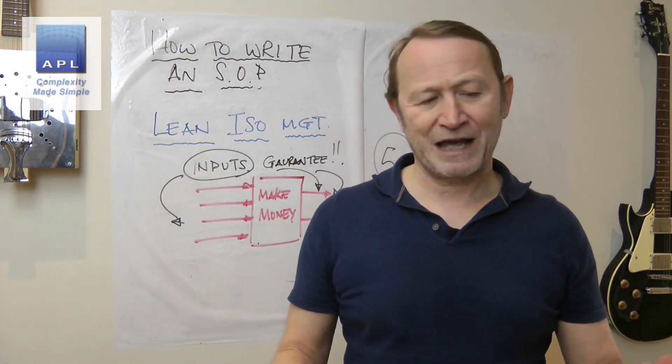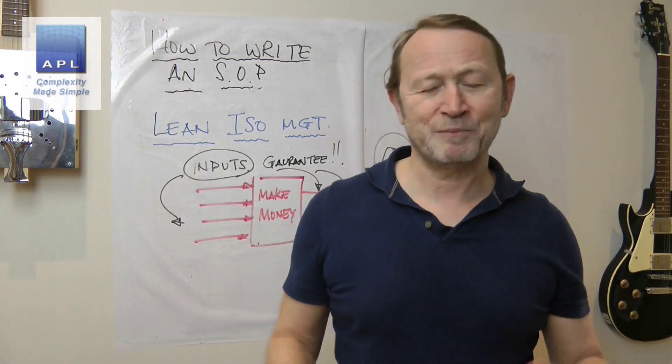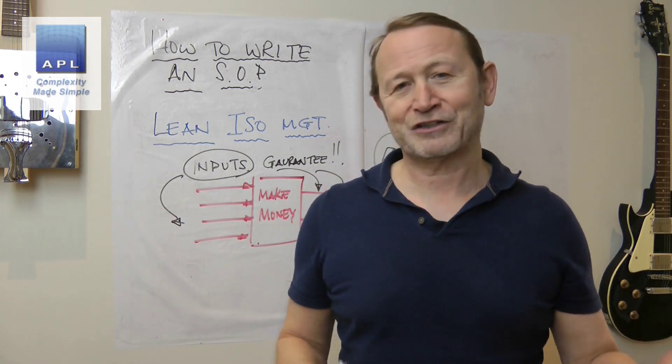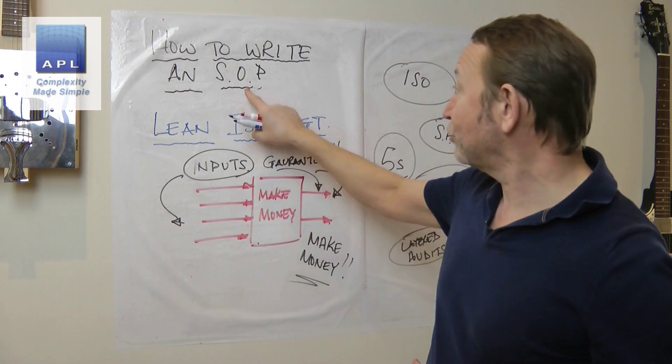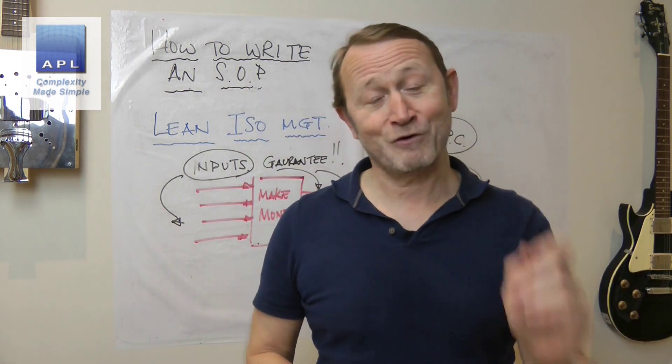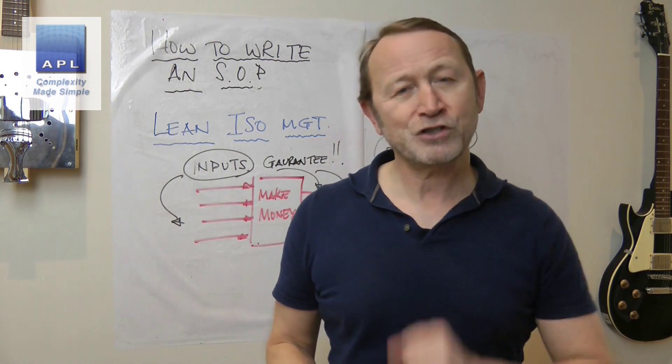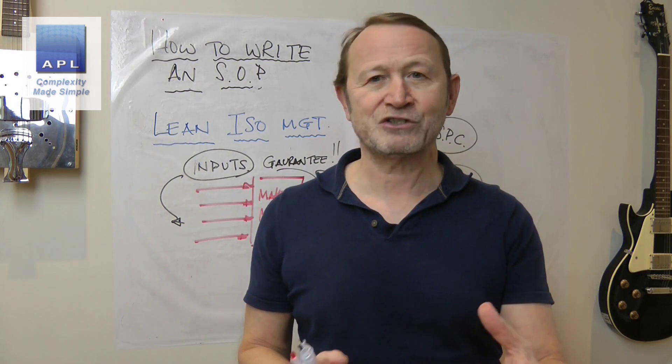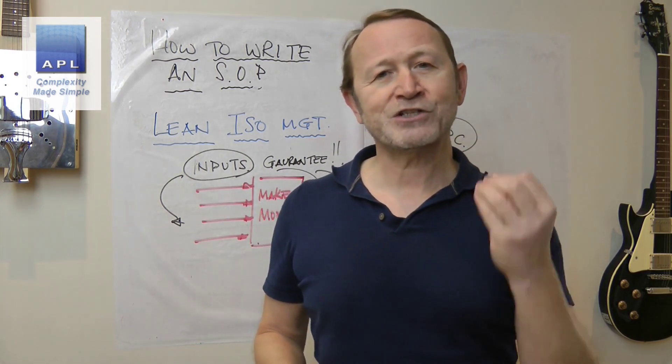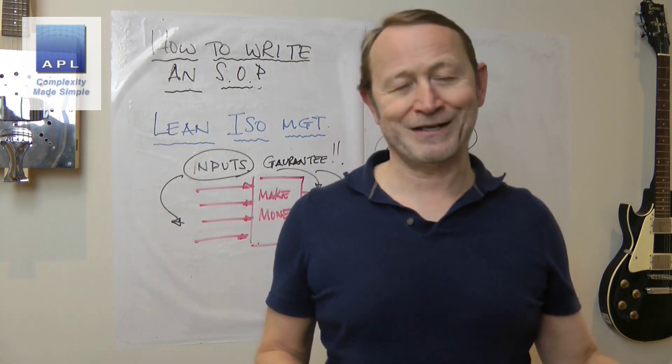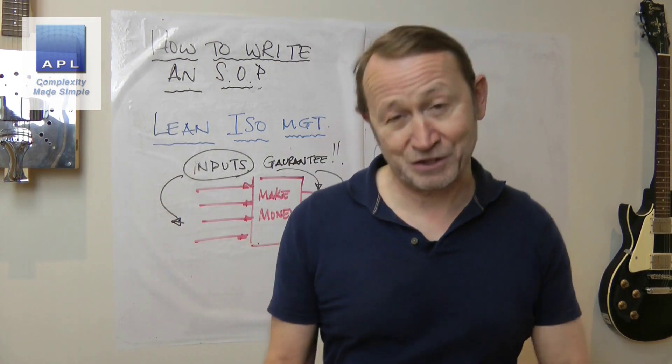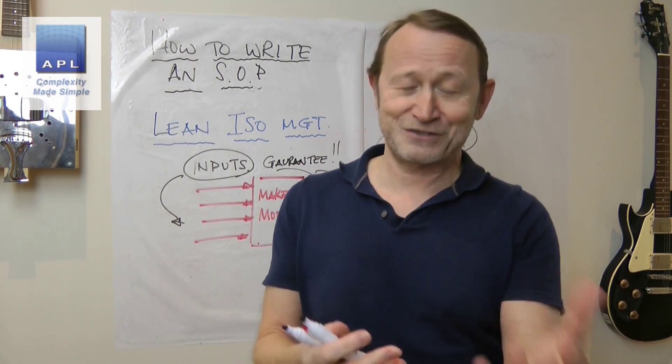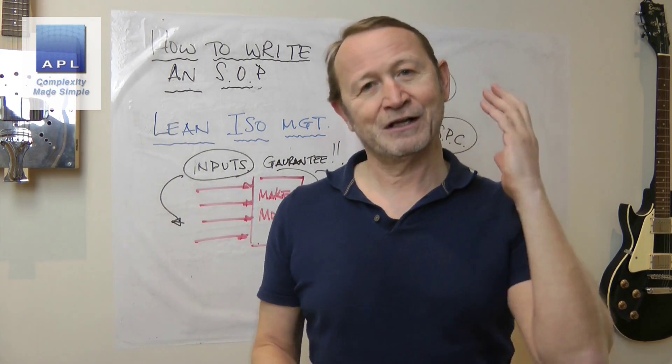Now like a lot of these exercises, we pick silly little processes, but I think in this case it works. We're going to talk about writing a standard operating procedure for making a cup of tea. And the first thing I'm going to show you is the standard operating procedure I typically see, which is telling a story of what I just did. We're going to make a cup of tea and the standard operating procedure just tells a story. This is the bad example.